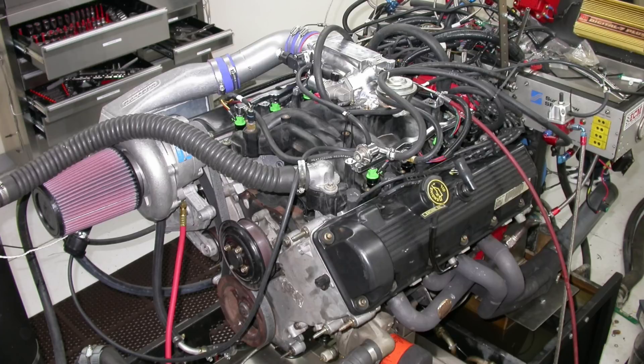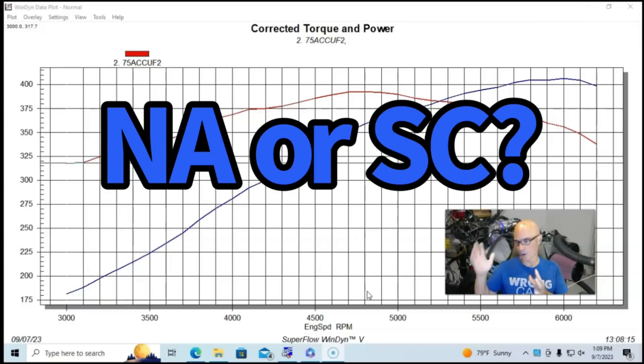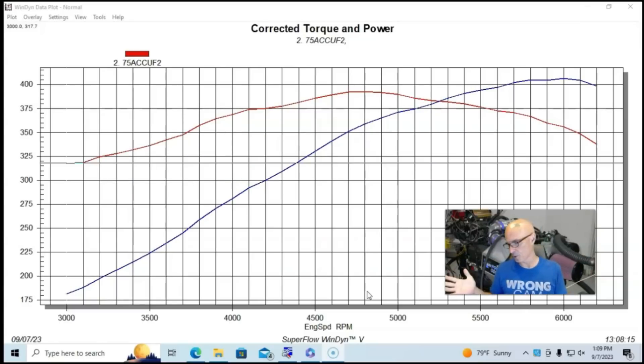Okay. Obviously, if the choice is, do I pick a naturally aspirated combination that's making good power or a supercharged combination that makes good power, the obvious choice is I want the combination of both of those. We want the really good NA power and we want boost because we know what happens when we get that. When you add boost to a really healthy NA combination, you get a much better supercharged combination. That's exactly what this was.